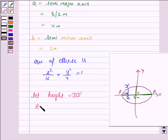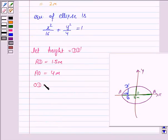Now we are given that distance of this point from one of the end is 1.5 meter, that is AD is 1.5 meter, and AO which is the semi-major axis is 4 meter. Then OD is equal to AO minus AD.